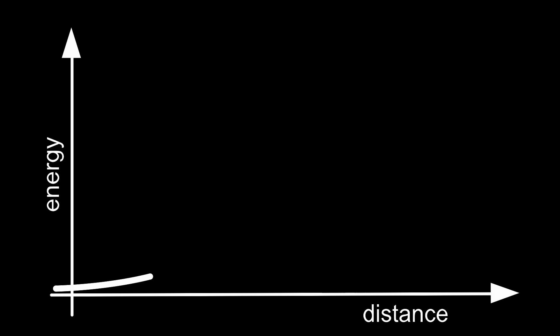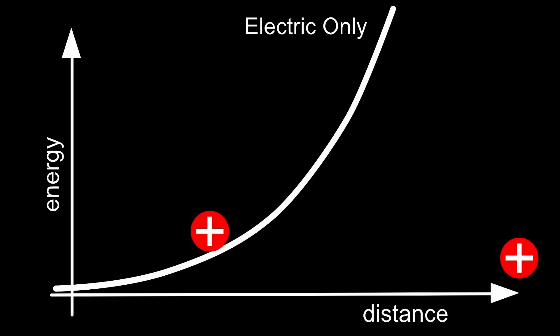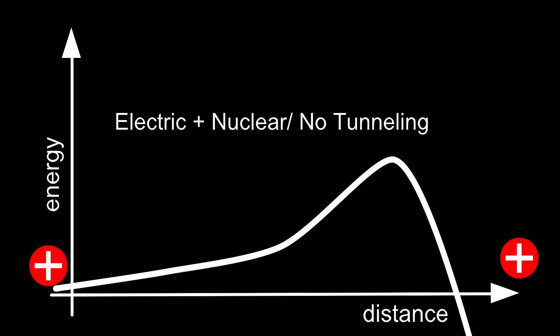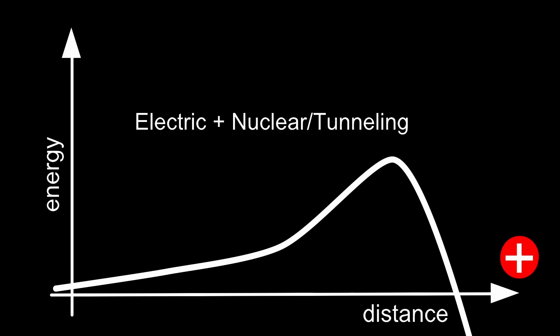Nuclei are all positively charged, so if one approaches the other, it'll be repelled by the electric force. However, the strong nuclear force is attractive. It only becomes relevant at short distances between the nuclei. If you add these forces together, that creates a potential barrier. That nuclei can tunnel through this barrier is why fusion in our sun works.